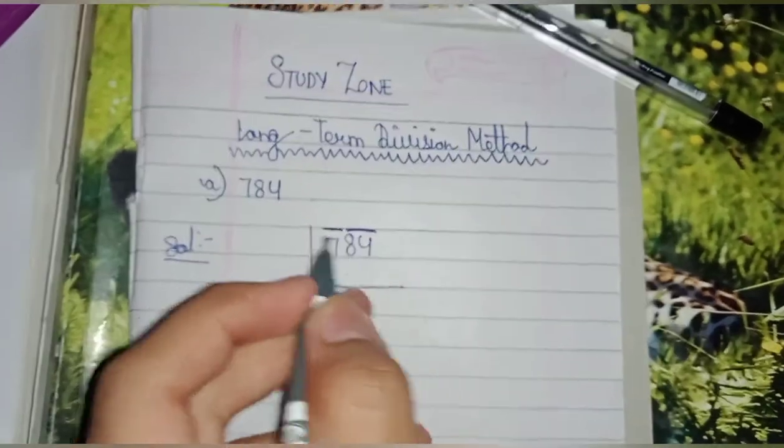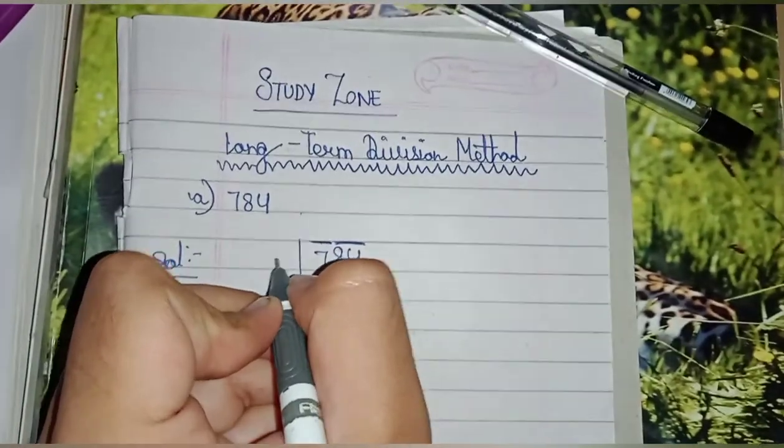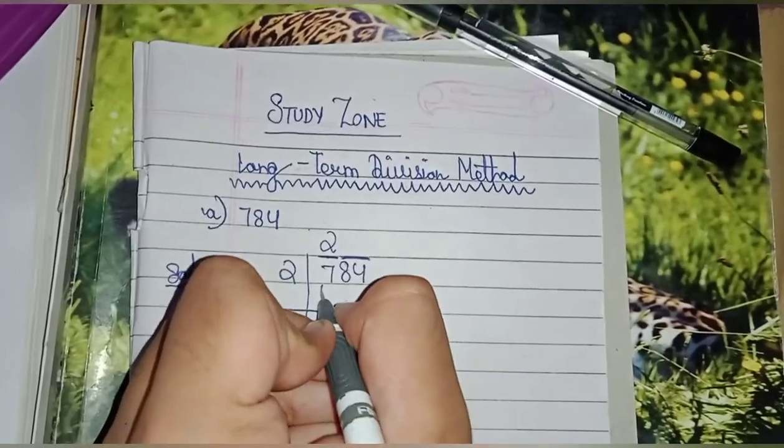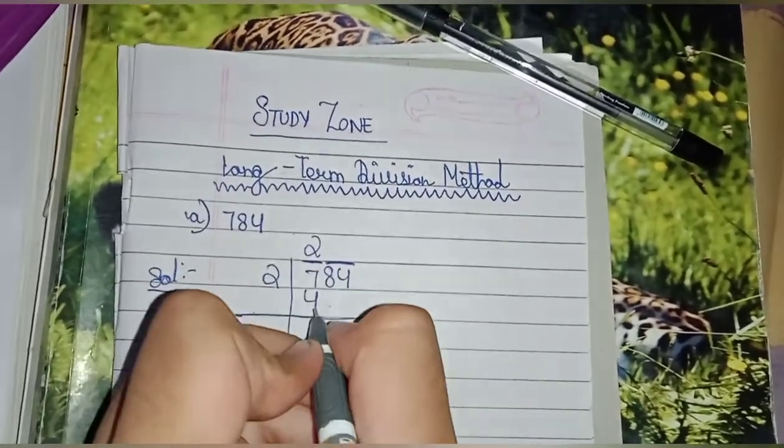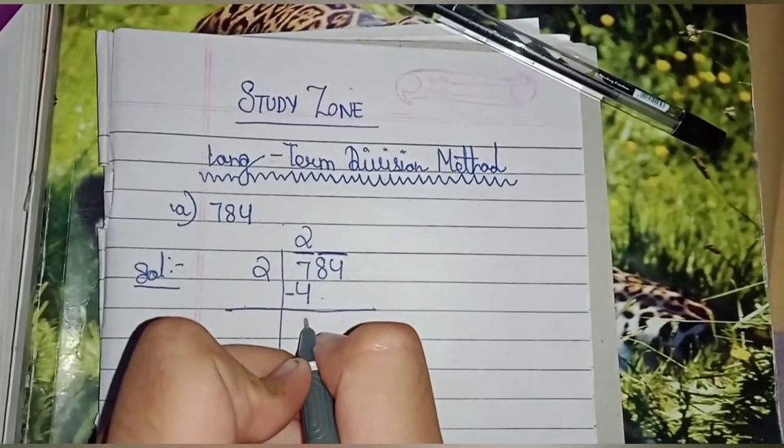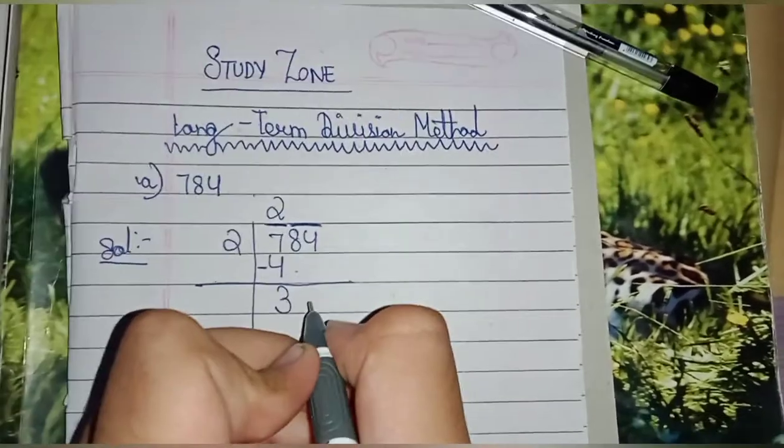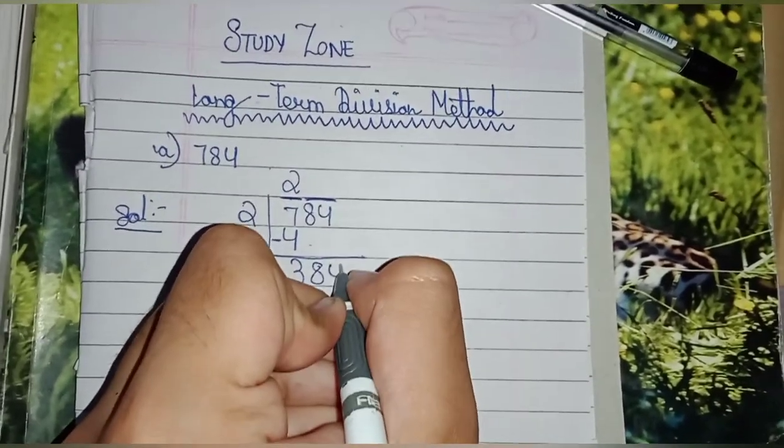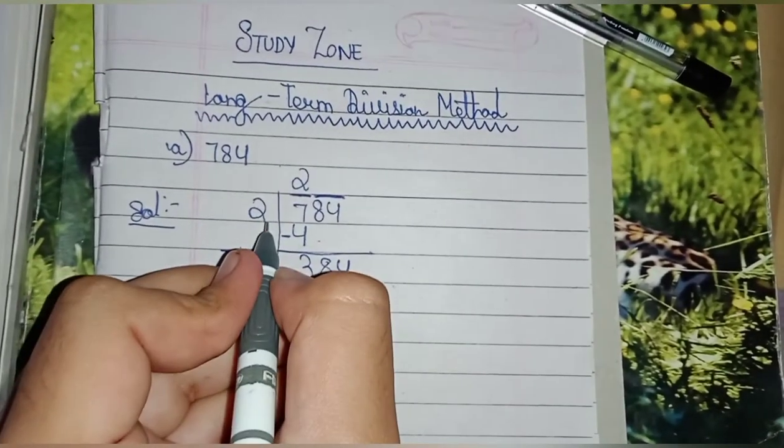Then 2×2 is 4. We write 4 here and then subtract it, so it will be 3. Then this period 84 will come down as it is. The number which you have written in the divisor will also act as the quotient.